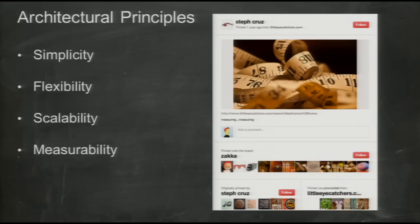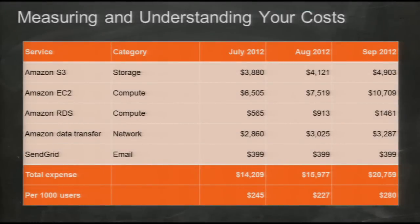When I joined Pinterest about a year ago, we were growing exponentially and so were our costs. It was tough to know whether we were just spending more because we were growing or whether we were getting less efficient. So one of the first things I did was build a model understanding our operational costs. We took the services we're using with Amazon and broke them down into buckets like storage, compute, email, and so on. We then calculated efficiency metrics — cost per user, cost per page view, or cost per sale. Being able to tie that cost to our business metrics helps us identify if we're getting more or less efficient.